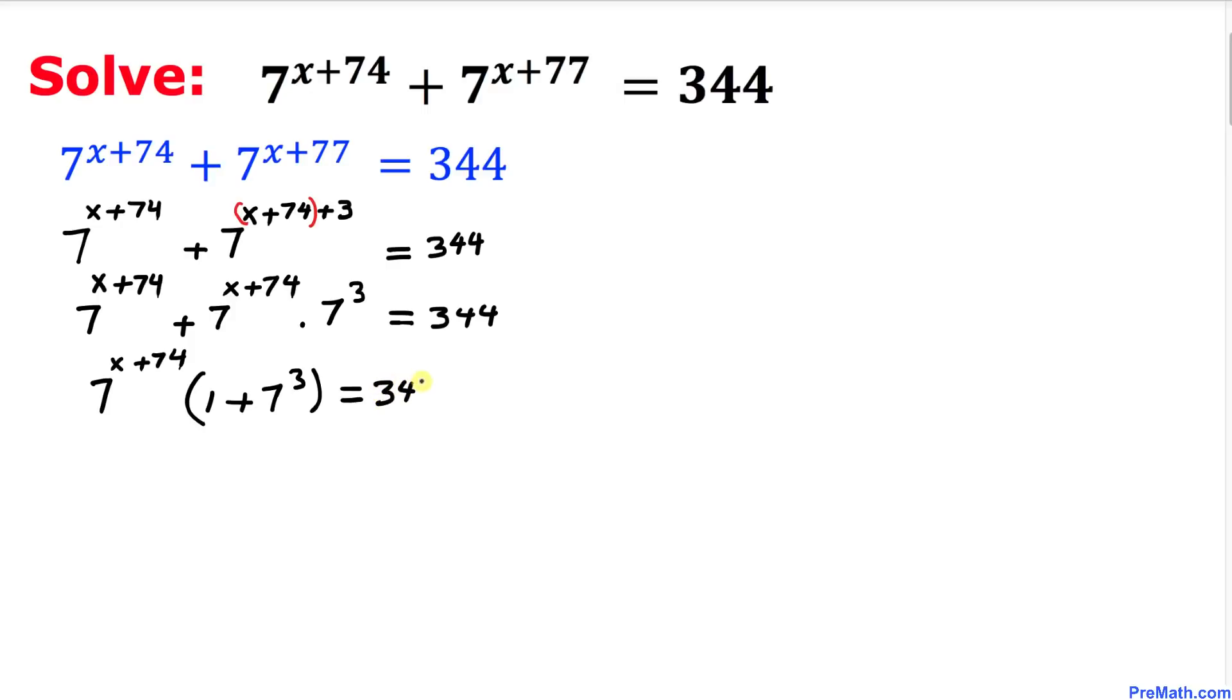And now we know that this 7 to the power of 3 equals 343, so this whole thing is going to become 1 plus 343, which means 344. So I can write this thing: 7 to the power of x plus 74, times 344, equal to 344. Let me go ahead and divide both sides by 344.